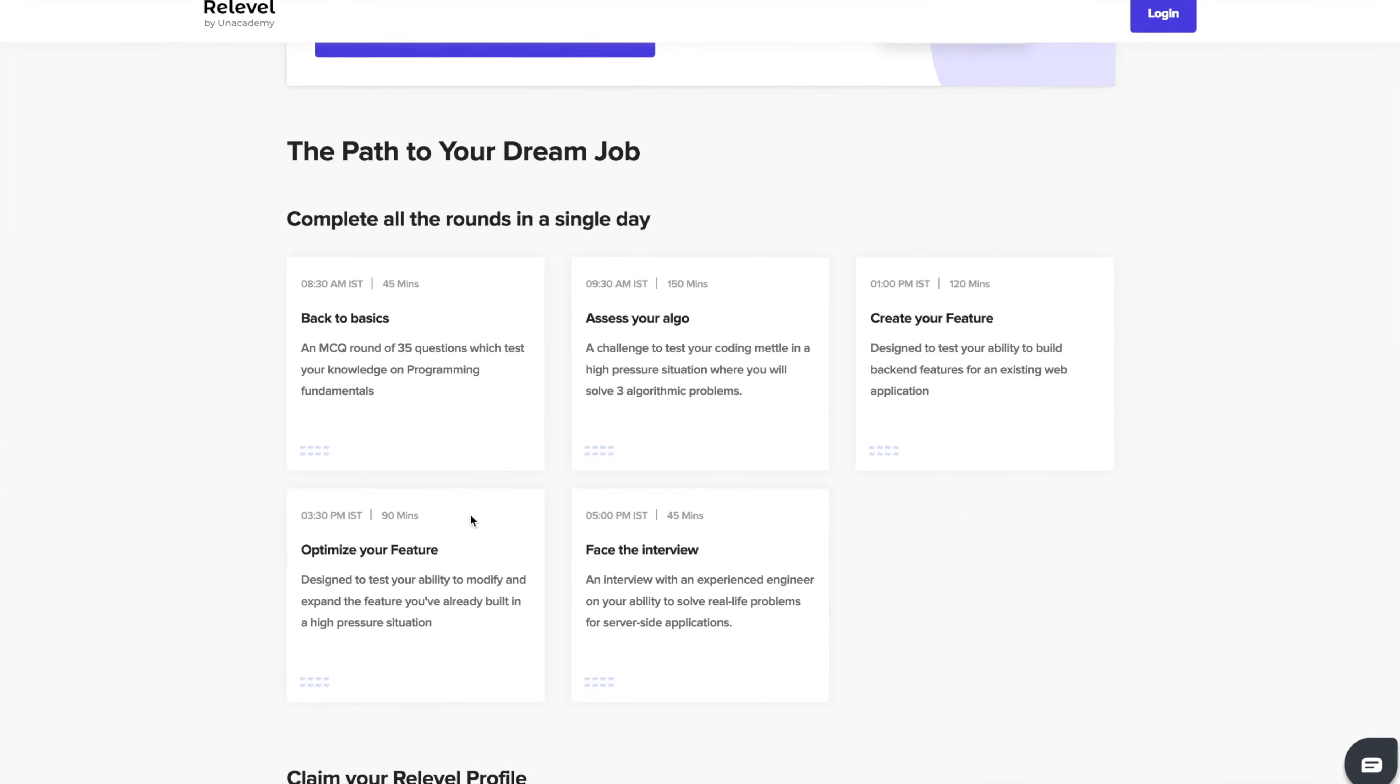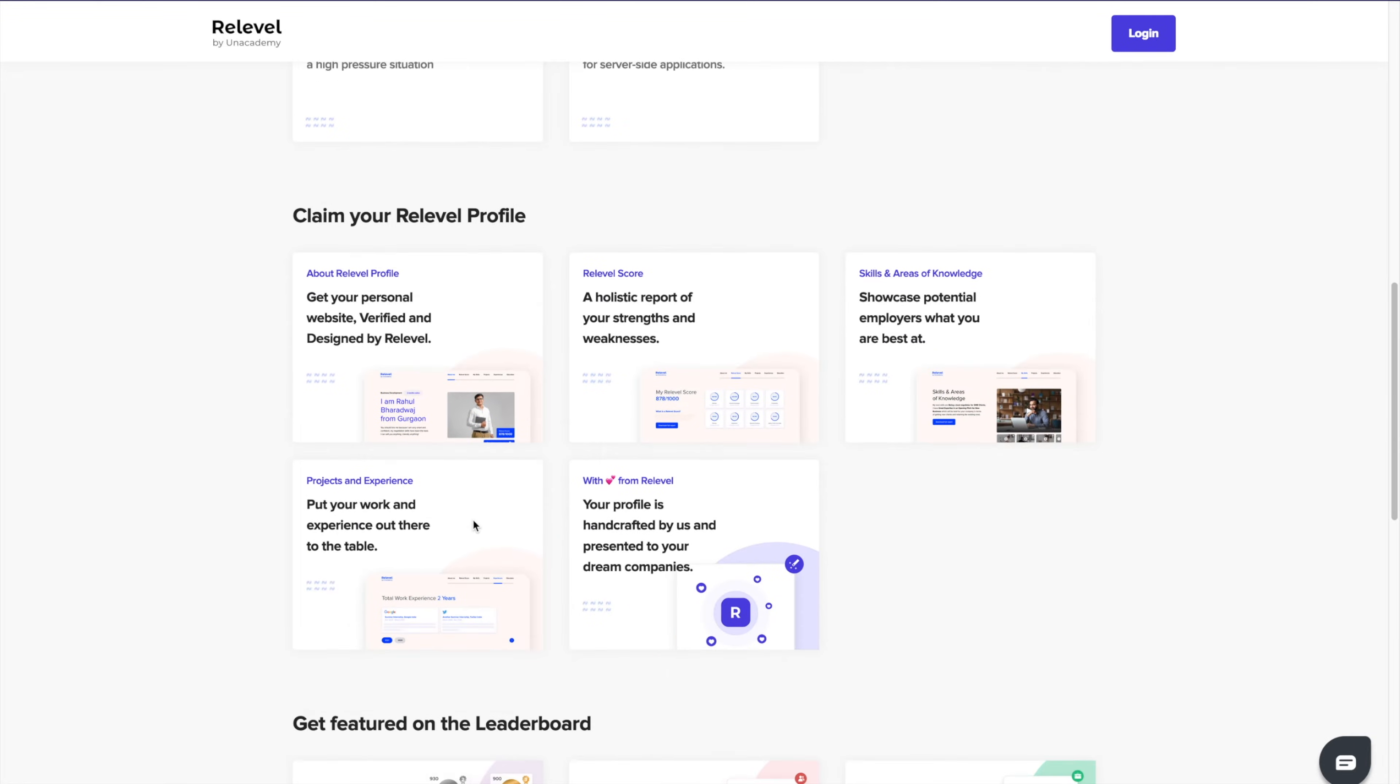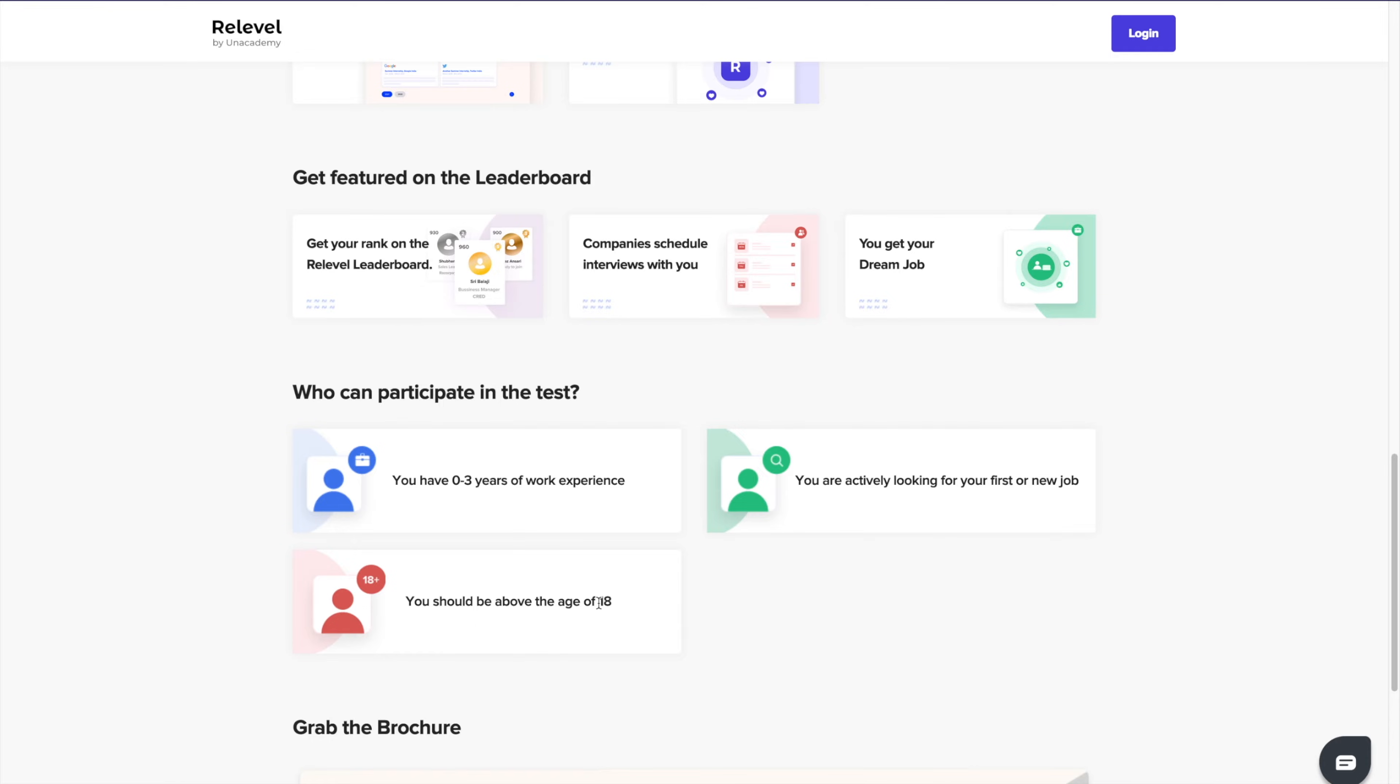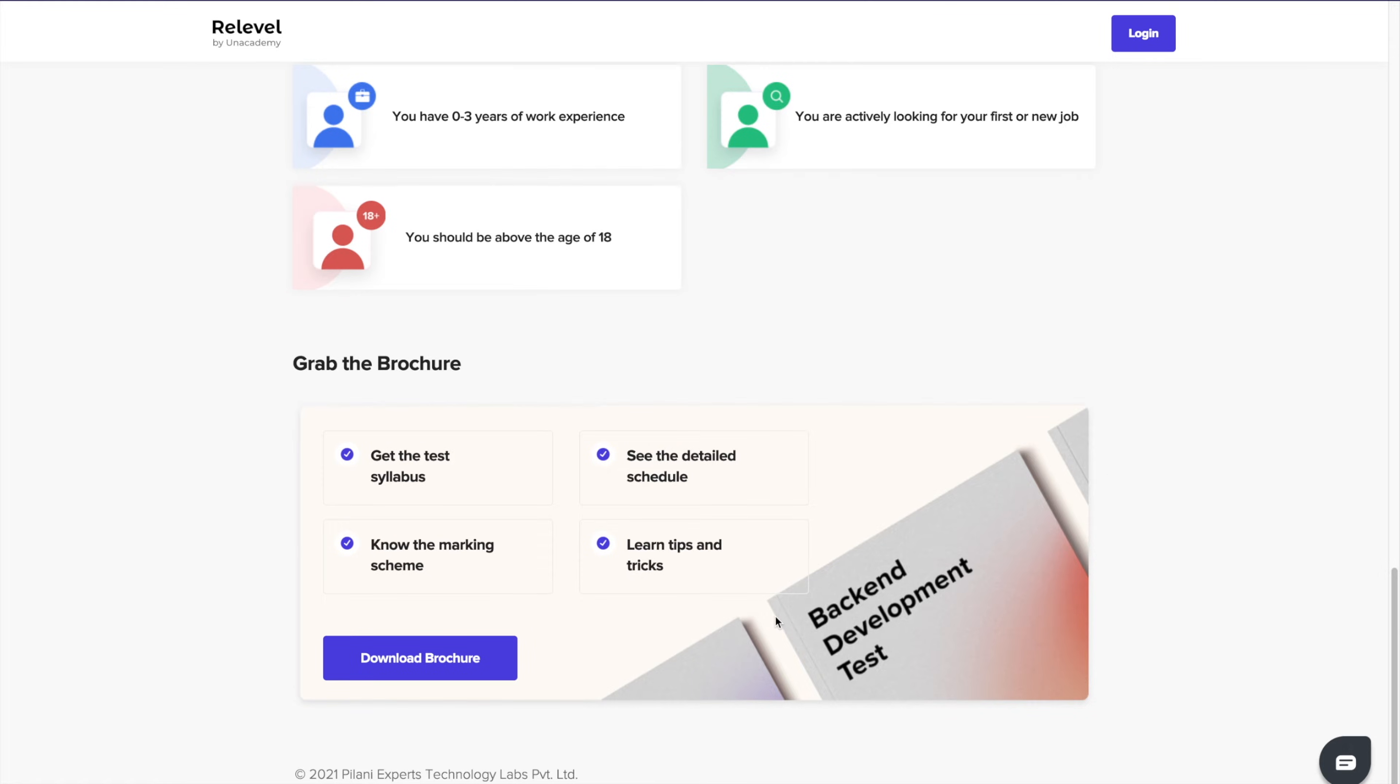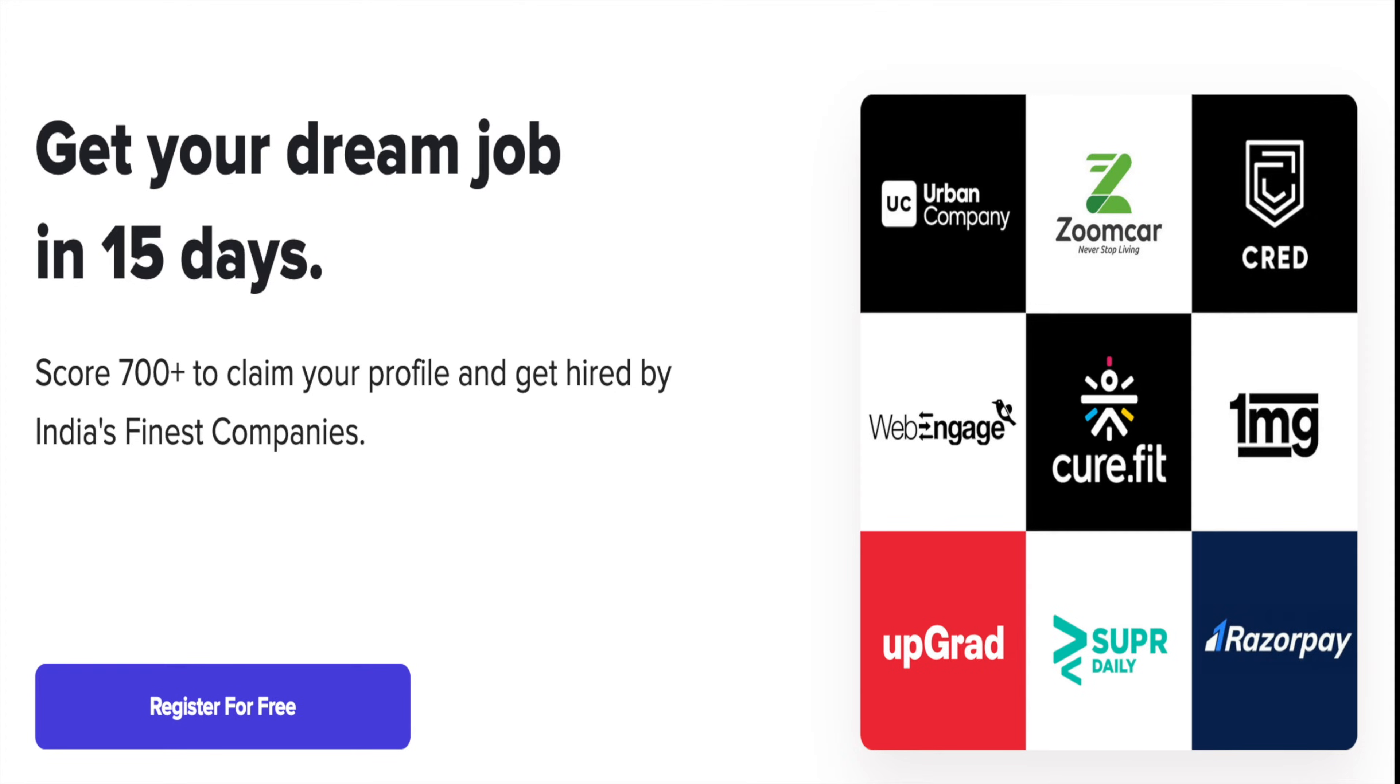If you use a platform like Releval by Unacademy, they conduct a test which is completely based on skills and you need to perform in your chosen field. Releval has around 1000 plus job openings by 50 plus top Indian companies and unicorn startups. What you need to do is just register for this test, apply, and after that your interview will be scheduled and you will be hired. The best thing is the Releval tests are free and you can check out all the links in the description below.